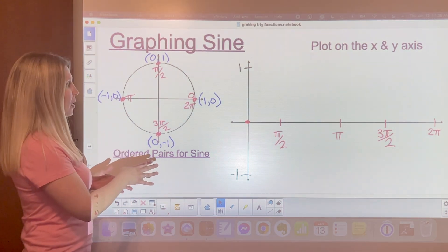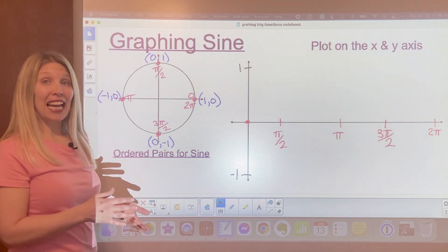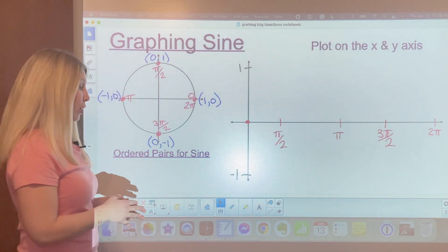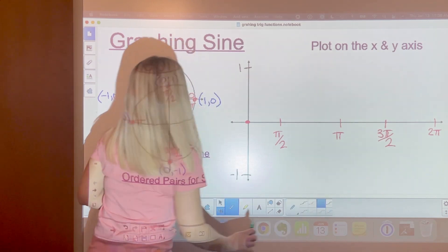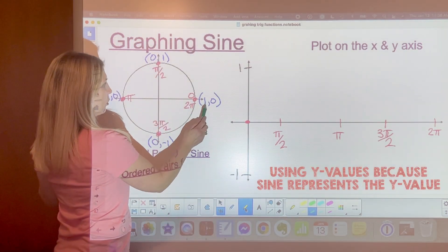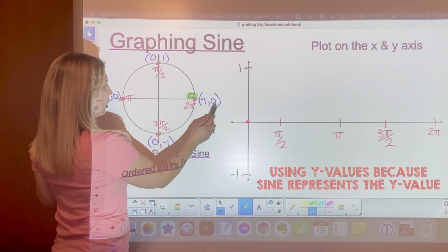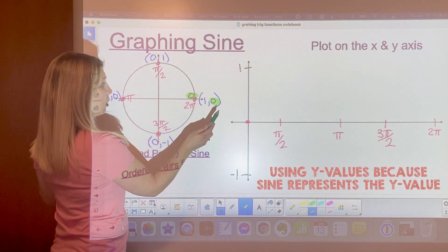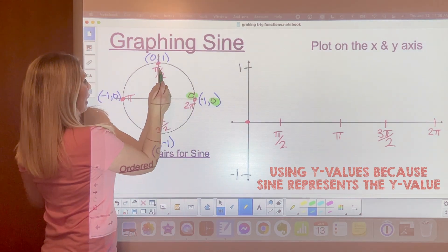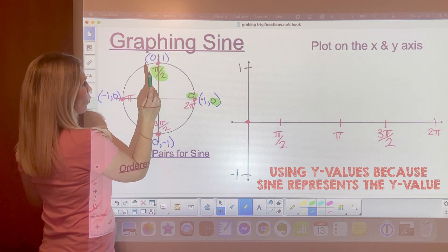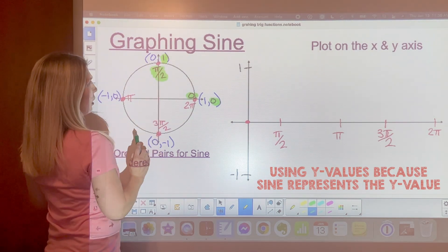The first thing you need to remember is that sine is our y value. We're going to look at our y values. When you look at our y values, at 0 we have a y value of 0. At pi over 2 we have a y value of 1.